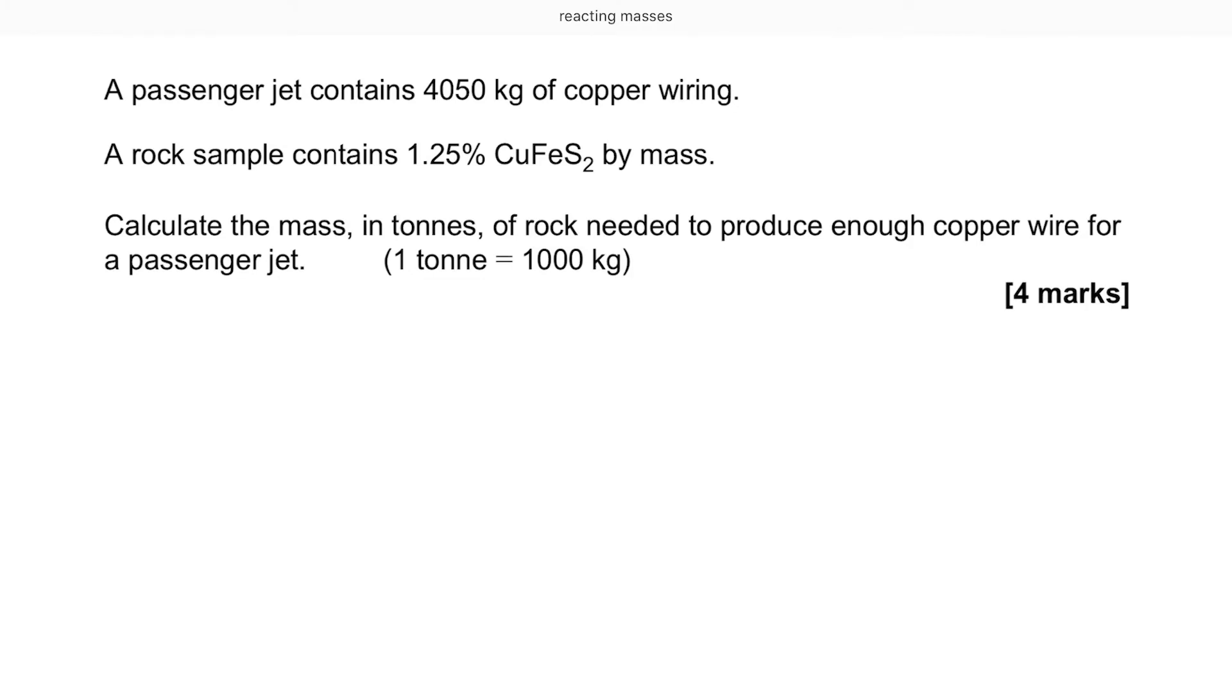So now let's have a look at a recent AS level exam question. This is where A level differs in that quite often you think you've got it all sorted and they give you a question. You don't know where to start. The key obviously is not to panic. Let's see what we can find out here. We have 4,050 kilograms of copper wiring needed. How much rock do we need to produce that? But it's only 1.25% of the CuFeS2 ore in the rock. Where shall we start? There are lots of ways of doing this. I tend to work step by step.